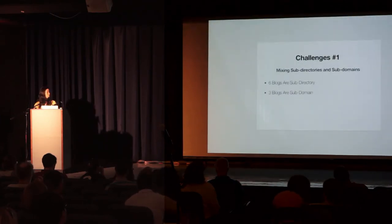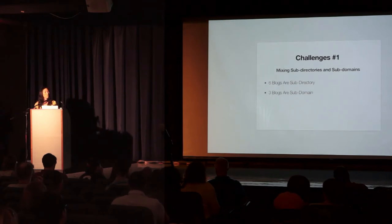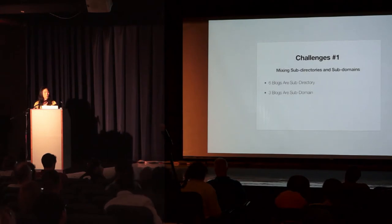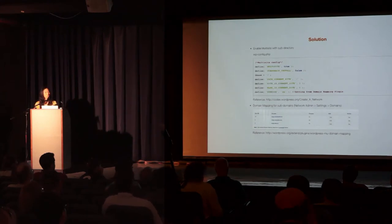That leads to challenge number one: mixing sub-directories and sub-domains. For those who have implemented WordPress multisite before, it makes you choose either sub-directories or sub-domains format. But as I mentioned, six blogs were in sub-directories and three were in sub-domains. To accommodate both, we enabled multisite using sub-directories format and used a plugin called Domain Mapping to handle the sub-domains.